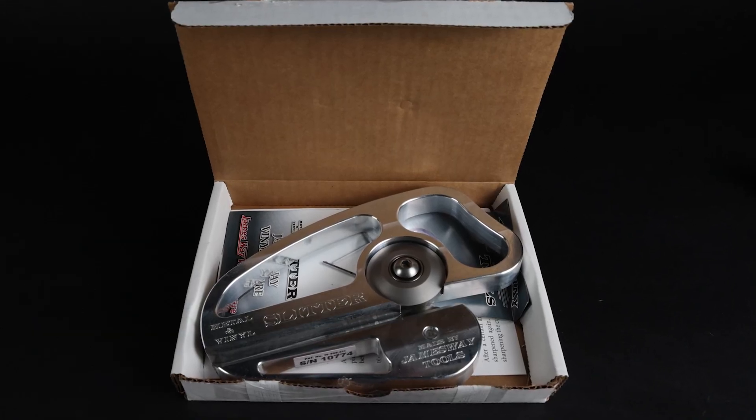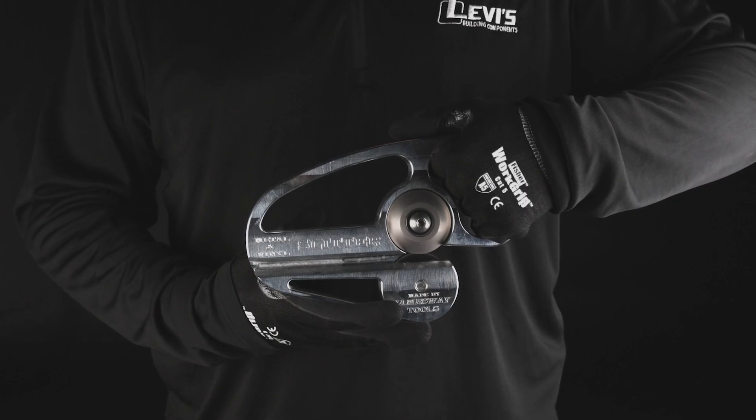The easy to use slitter from James Way tools allows for fast on-site cuts to metal and vinyl panels.